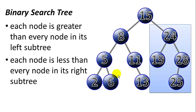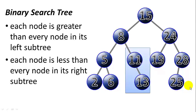And each node is less than every node in its right subtree. Here we can see that node 15 is less than all the members of its right subtree. 24 is less than the members of its right subtree. 8 is less than the members of its right subtree, and so on. These two characteristics make a binary search tree.